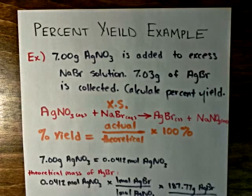Times the molar ratio of silver bromide and silver nitrate times the molar mass of silver bromide to give us the mass of silver bromide formed. And this mass of silver bromide is 7.74 grams.